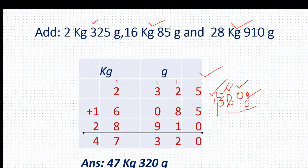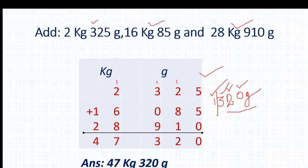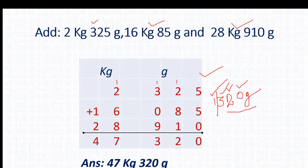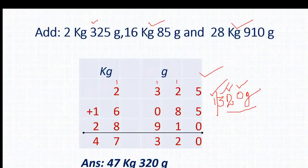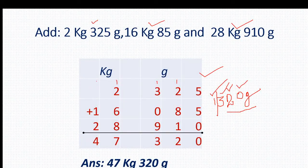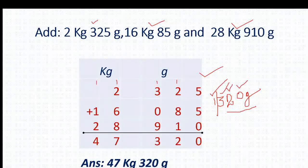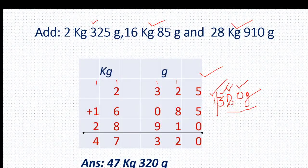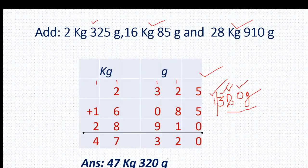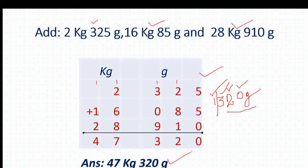So 1 plus 2 is 3, 3 plus 6 is 9, 9 plus 8 is 17 — 7 written here and 1 will be added to the next column. So 1 plus 1 is 2, 2 plus 2 equals 4. So 47 kg 320 gram will be the answer.